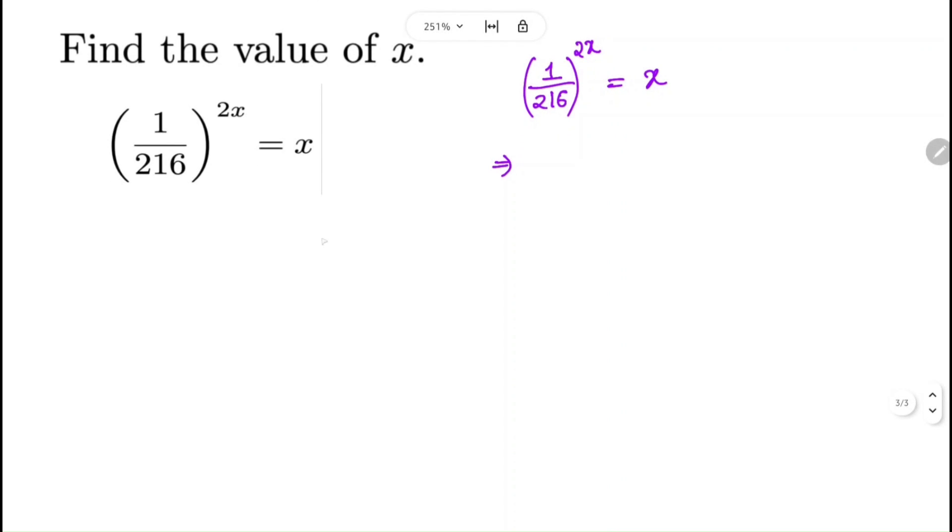We know that 216 is equals to 6 cube. So we can write (1/6³)^(2x) = x.